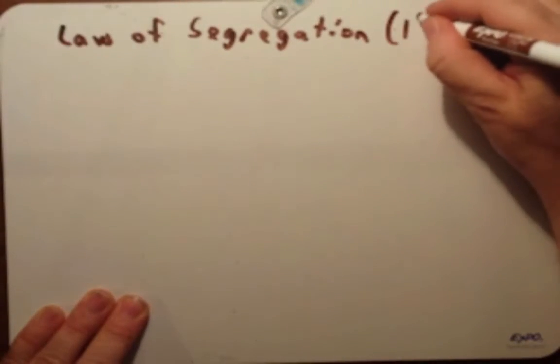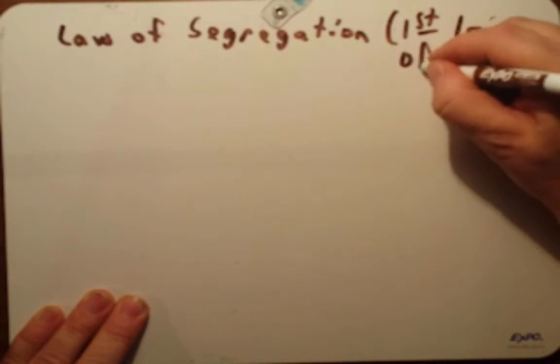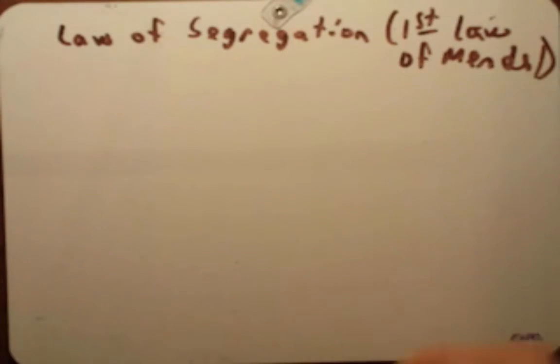We often call this first law of Mendel. He had no idea this would become his first law. He made these crosses and made some conclusions, and later on we put these conclusions together and formed this first law of Mendel or the law of segregation.